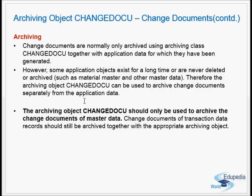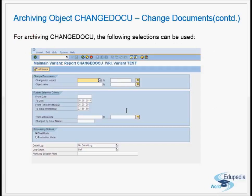The RSCDOK99 selection screen allows filtering by object name and date. This report should also be scheduled periodically, and the general retention period for change documents is typically three, six, or nine months depending on business requirements.